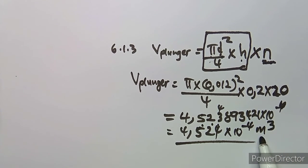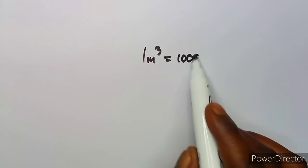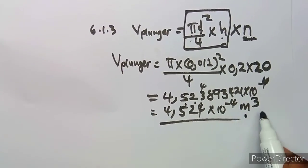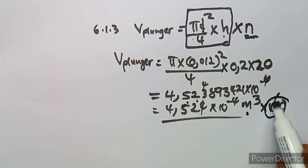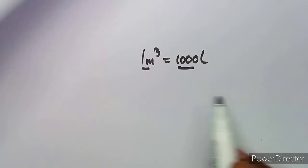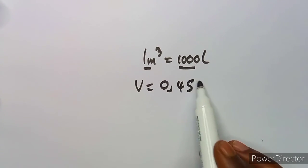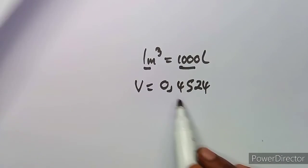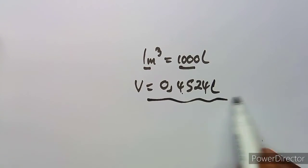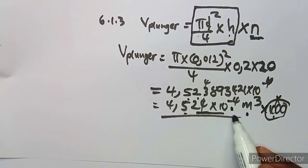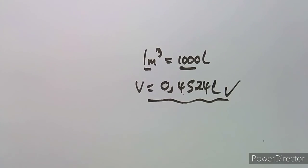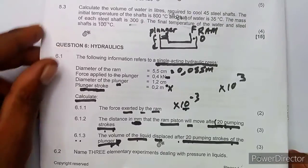Using the calculator, we obtain approximately 4.5239 × 10⁻⁴ cubic meters, rounded to 4.524 × 10⁻⁴ m³. Volume is measured in cubic meters. You can also convert to liters using the relationship 1 cubic meter = 1000 liters, which gives approximately 0.4524 liters. You can choose to leave the answer in cubic meters or liters — both are valid ways of expressing volume.